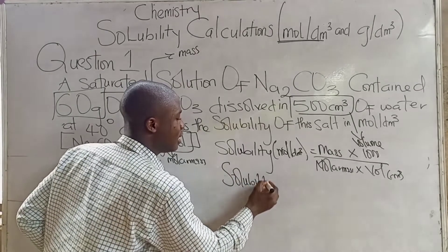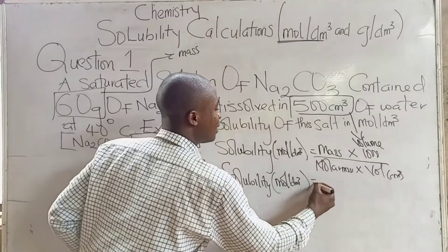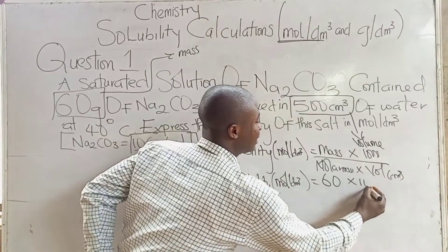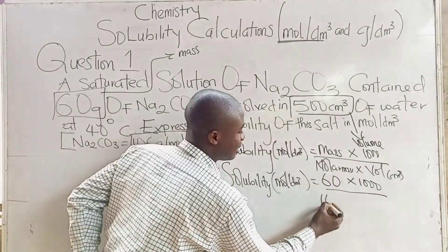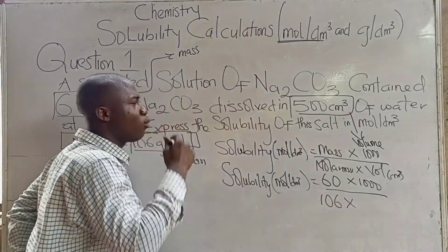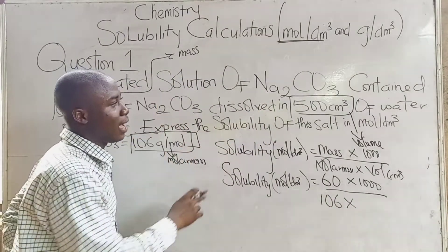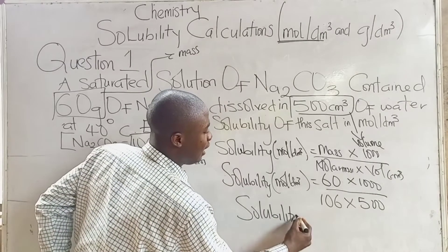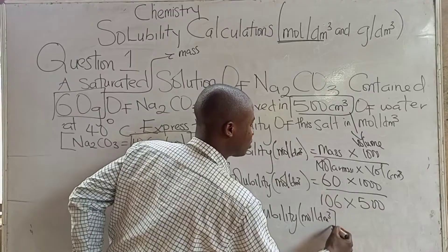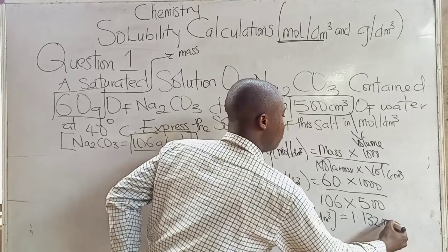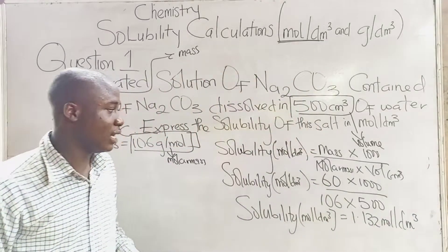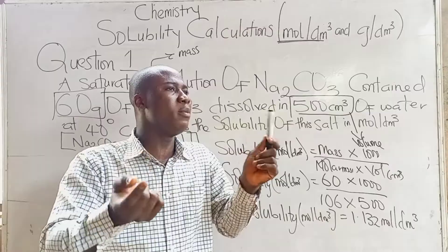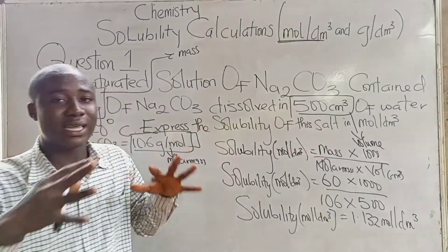So it becomes: 60 × 1,000 over 106 × 500. When we press our calculator, the solubility in moles per dm³ of the salt becomes 1.132 moles per dm³. This is the answer. Recall — whenever your volume is in cm³, add 1,000. If the volume is in dm³, remove 1,000.